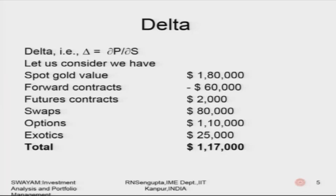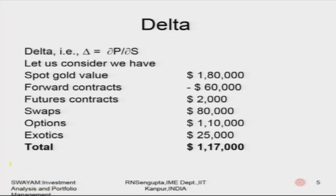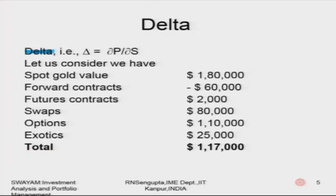The delta concept is basically the partial derivative or rate of change of the portfolio price with respect to the spot price, considering all other variables constant. Other variables affecting the price of the portfolio can be, for example, time, or different types of variances or volatility which may be present in the market.